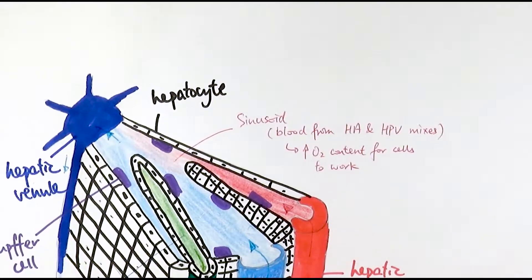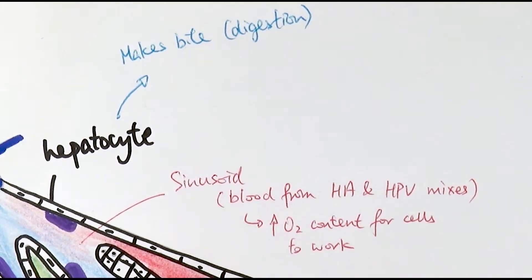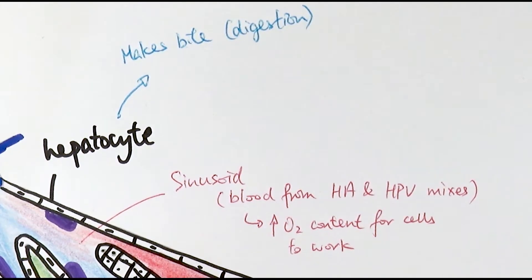Now to elaborate a little bit more on the function of the liver, we will look at this in terms of the hepatocytes, because it is mainly the hepatocytes that carry out the liver's functions. First, hepatocytes can make bile, which is used in digestion to emulsify fats — that is the key word we use. Never say that bile is an enzyme because it is not. It doesn't chemically break lipids down; it just physically breaks the oil drops down, and emulsification itself is a physical process.